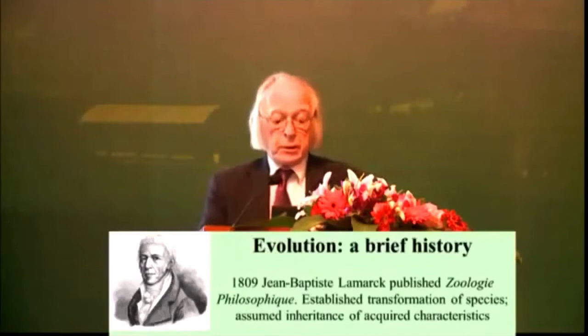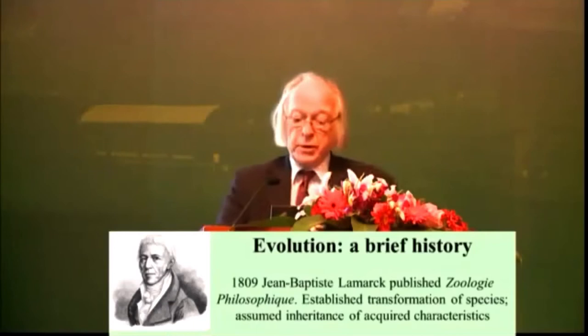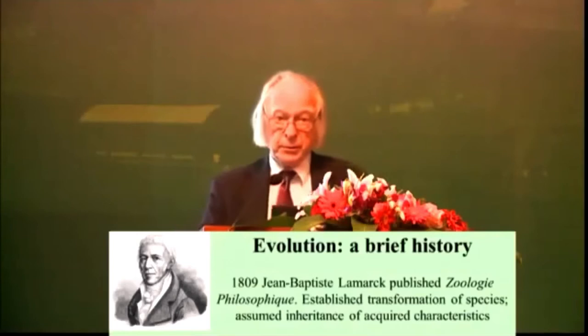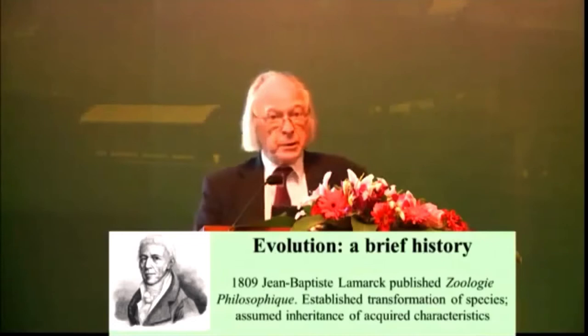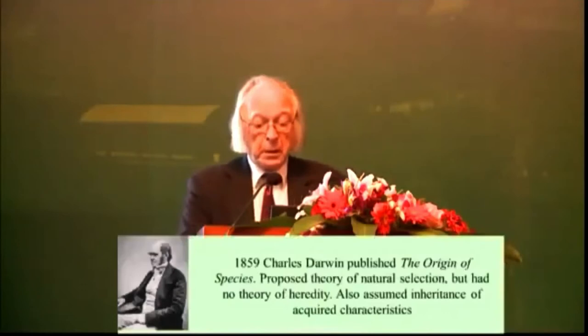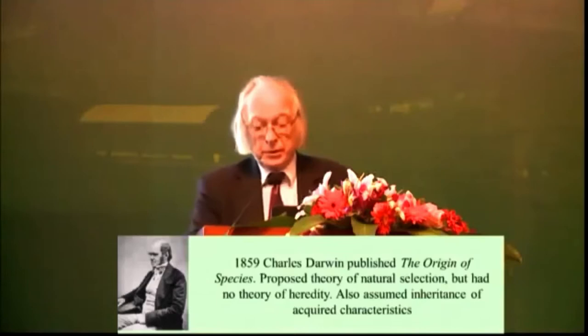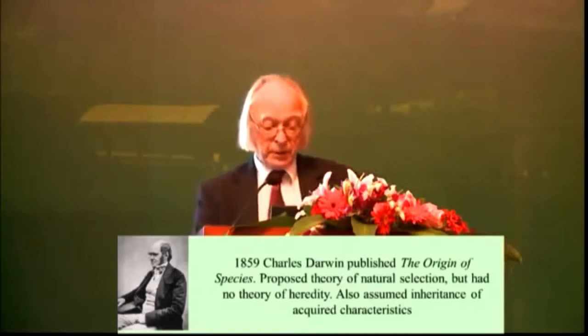Just a little bit of brief history. If you go back about 200 years to Jean-Baptiste Lamarck, the French biologist who published the Zoologie Philosophique, he established the transformation of species. It's also well known that he assumed in his work that there could be the inheritance of acquired characteristics, and for that reason that process is sometimes called Lamarckism. But he didn't invent the idea. He assumed it, as others did too from time immemorial — and in particular Charles Darwin, who 50 years later published The Origin of Species and proposed the theory of natural selection. He also assumed the existence of inheritance of acquired characteristics. The significance of this will become clear later in the lecture.